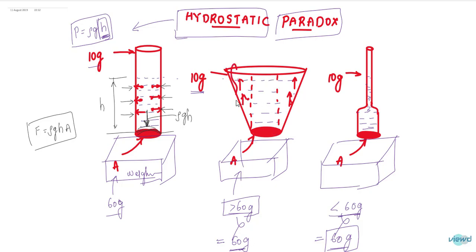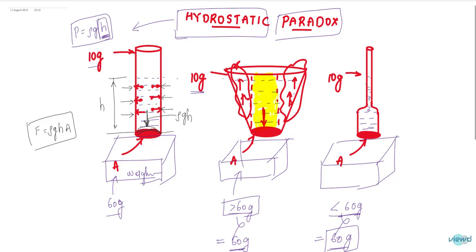The force acting on the base is entirely due to the central column directly above it. Since we took the same height h for all containers, the force is ρgh × A for this container as well. That is why it also shows 60 grams.